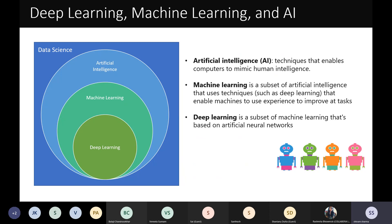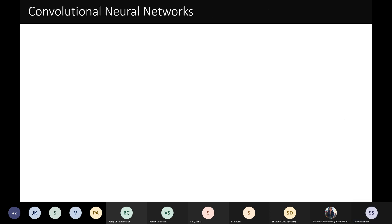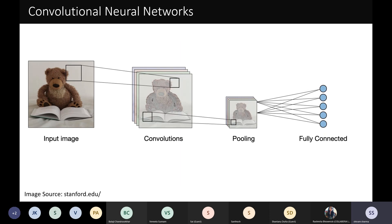Machine learning is a subset of AI where you practically deploy things and make them artificially intelligent. Deep learning is a subset of machine learning where the architecture tries to mimic the human brain — the neuron structure we have in the brain. Today we're focusing on CNNs — convolutional neural networks — and at a high level they include input images, convolutions, pooling layers, and fully connected layers.